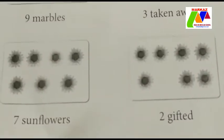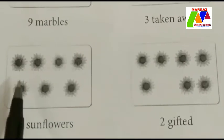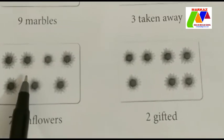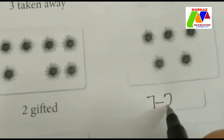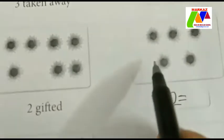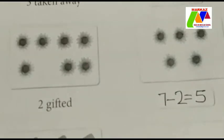Next example. Here we can see 7 sunflowers. 2 gifted. So how many sunflowers can we see? 7 minus 2 is equal to — 1, 2, 3, 4, 5. How many sunflowers? 5. The answer is 5. All of you clear?